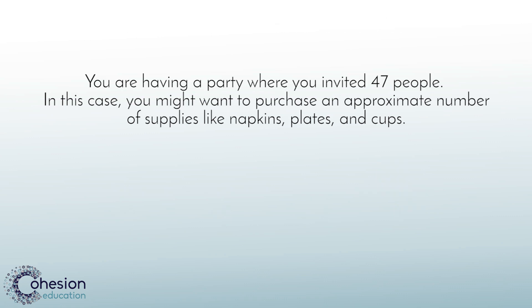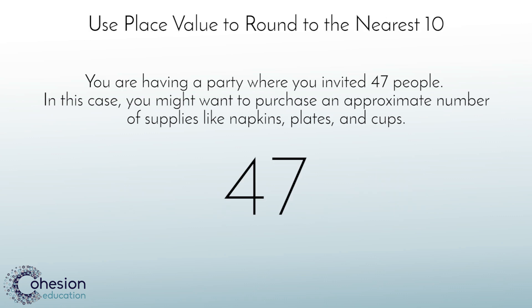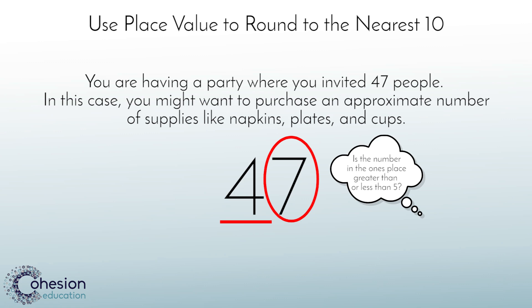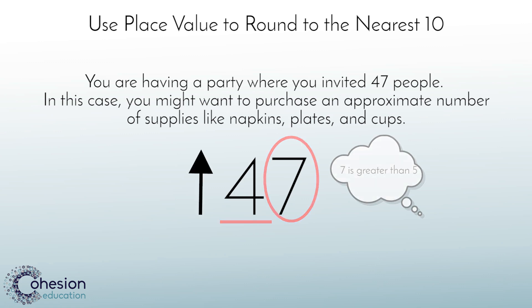After a student masters the number line, they'd be introduced to another strategy for rounding called rounding using place value. When given the number 47 and asked to round to the nearest ten, students would underline the tens place and look to the right to circle the number in the ones place. Students would then think: is the number in the ones place greater than or less than 5? This is due to the fact that 5 falls directly in the middle of a group of ten. Since the number 7 is greater than 5, the student would round up to 50 from 47.